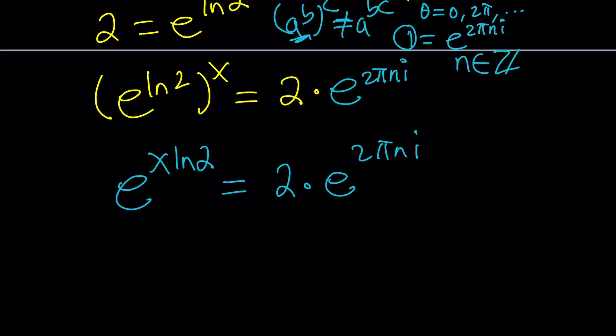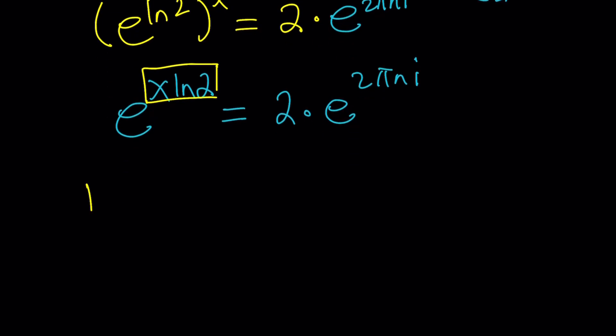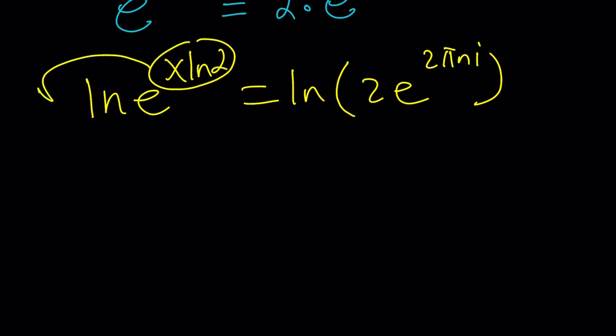Next, we're going to natural log both sides. And when we do, we can go ahead and bring this down, because ln e is 1. Make sense? So let's go ahead and ln both sides. And then we're going to get this times ln e, which is 1, by the way. So it's going to be x ln2 equals.